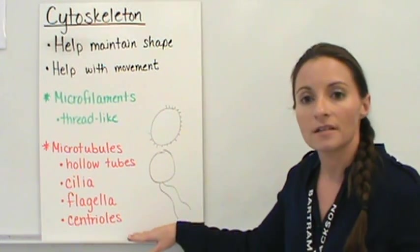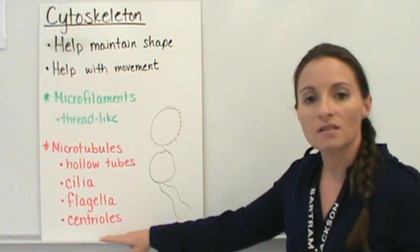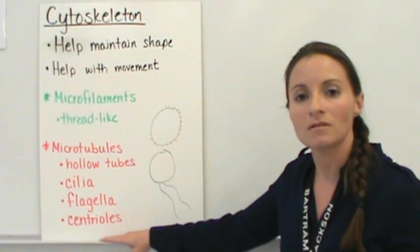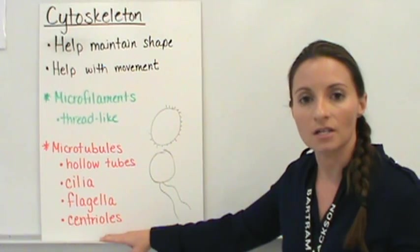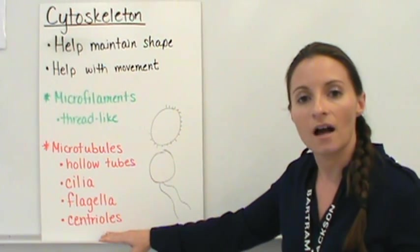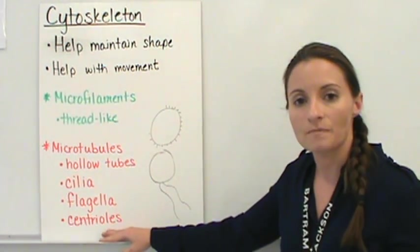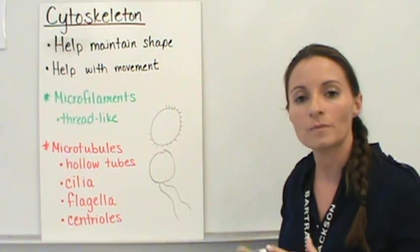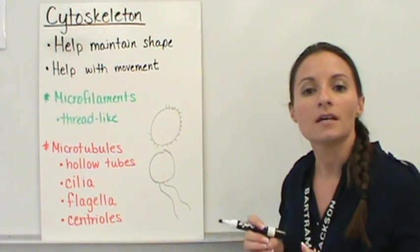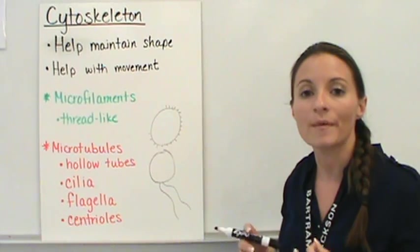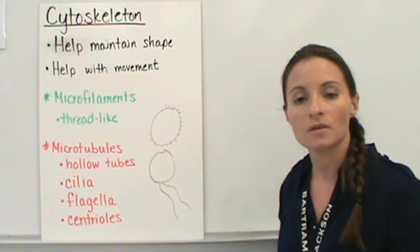The last structure that's a microtubule is what's called a centriole. The centrioles help in animal cell reproduction. We will get into that at a later point in time. But basically what the centrioles do is they help separate the chromosomes in animal cell reproduction, or mitosis and meiosis. So we'll get into that later.